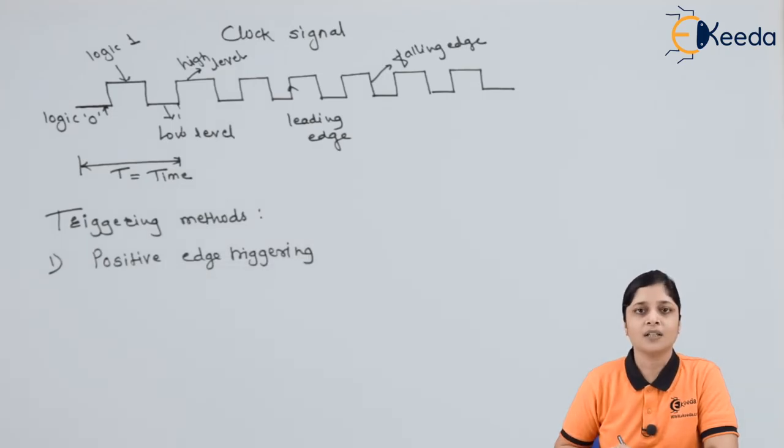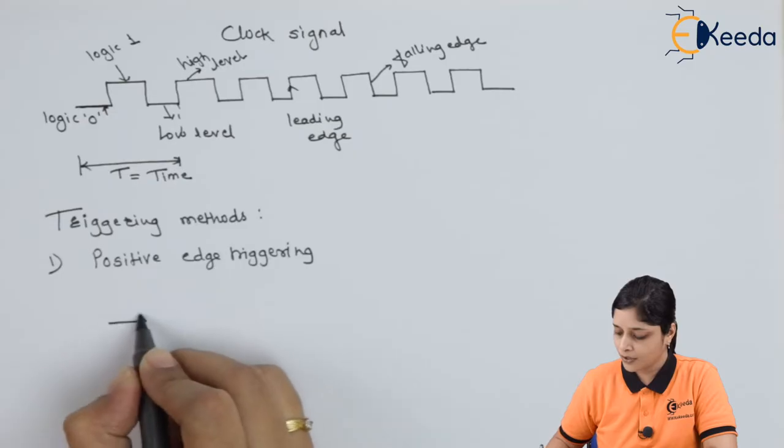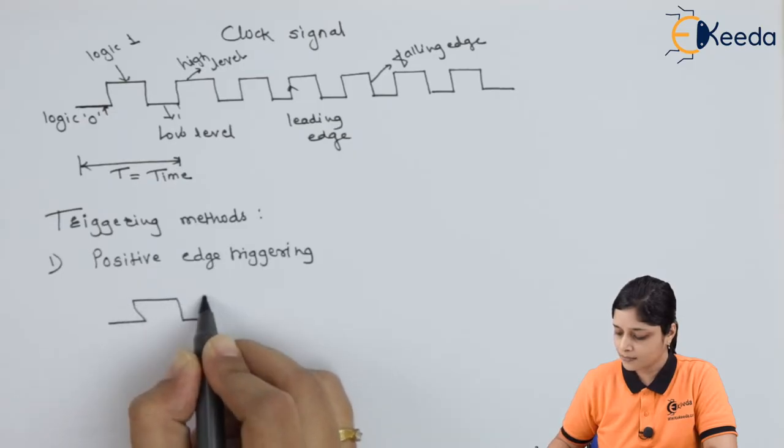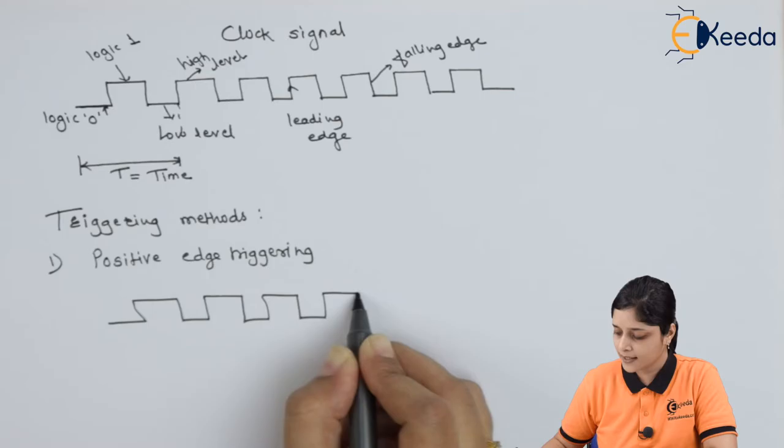In positive edge triggering, we have to draw the clock signal. How will you draw the clock signal? This is your clock signal.